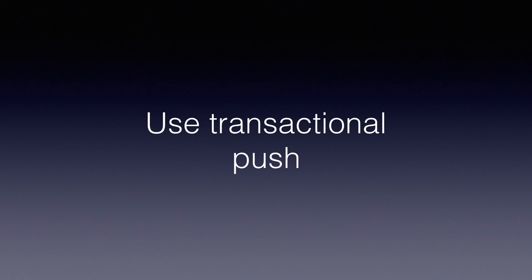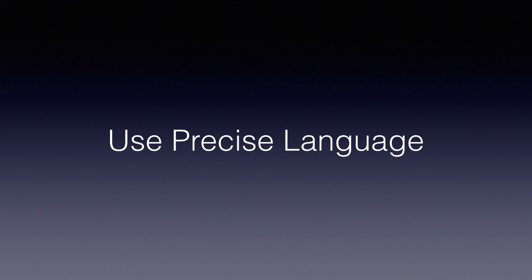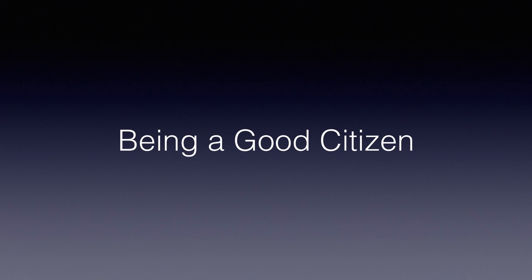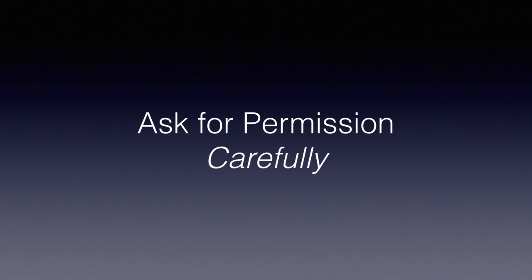Transactional push — one-to-one pushes — are by definition personalised and adhere to time zone support. Being a good citizen: ask for permission carefully. Don't ask on app launch. Put up a screen saying 'hey, we want to send you pushes — here are the benefits to you as a user.' If you don't have a benefit, don't ask for push. If they say okay, then start the registration process. We've seen opt-in rates go from 20-30% up to about 70-90% with just this one simple change.